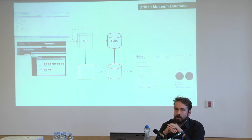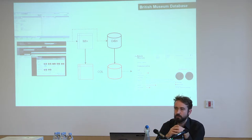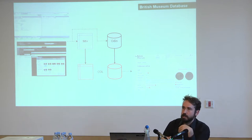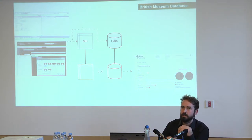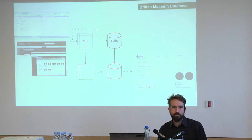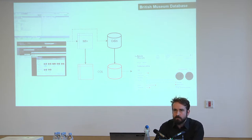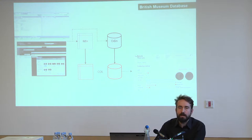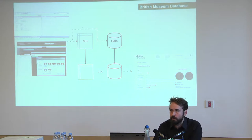There's also a database called Odin which manages all images associated with objects. These are the two databases that we put data into — you upload images into Odin, type things into Merlin, then connect those in some way. And then there are two shadow databases within the museum that disseminate this. A copy of MI Plus and a copy of Odin together are called Collections Online.